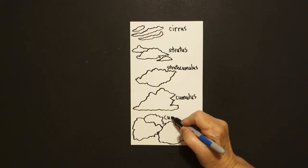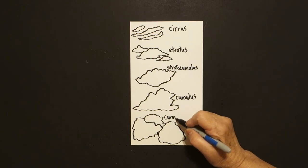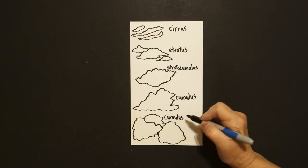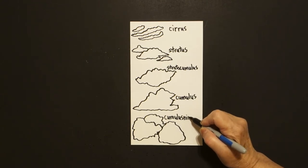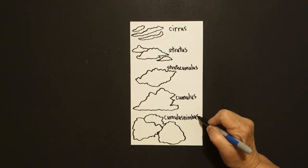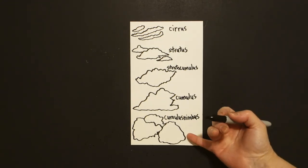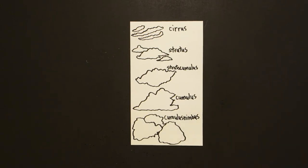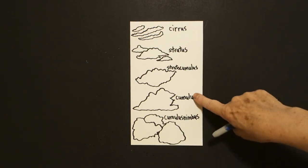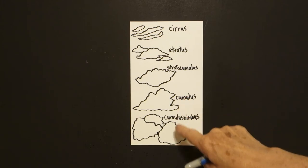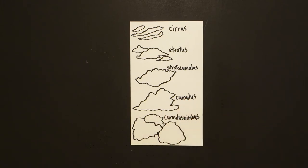These are cumulonimbus clouds and these are the thunderstorm clouds. They look like mountains of very tall cumulus clouds. Just imagine these fluffy clouds, bigger and more intense.